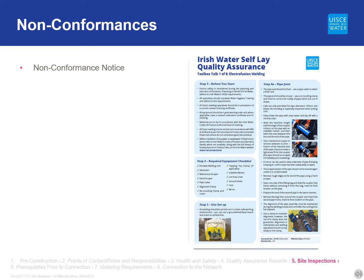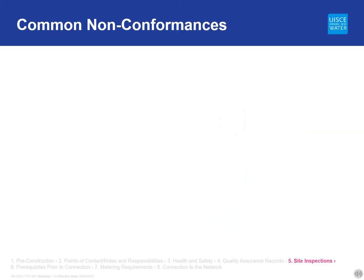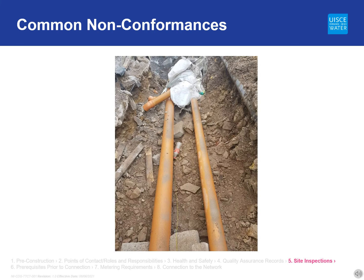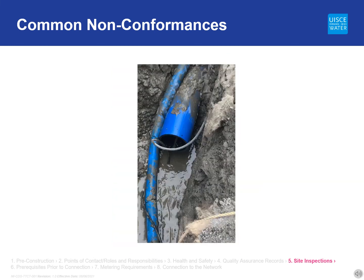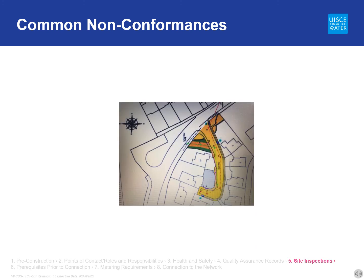A non-conformance notice will be issued by the field engineer to the developer, construction engineer, and design engineer when a non-conformance or failed test is found on site. The developer will have 5 days to respond to the notice detailing what remedial works will be carried out. The field engineer will then conduct a close-out inspection to ensure compliance with codes of practice. Irish Water has a full suite of technical guidance documents including a library of toolbox talks which address common non-conformances, available on the Irish Water website. Some of the most common non-conformances include non-compliant materials, separation distances, non-compliant bedding and backfill material, contaminated pipes, poorly constructed valve chambers and manholes, damaged materials, and issues relating to way leaves and easements.